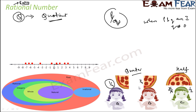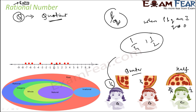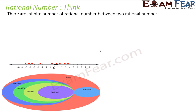So quarter, half — these kinds of concepts we can represent using rational numbers. For example, 1 by 4 and 1 by 2 are examples of rational numbers.